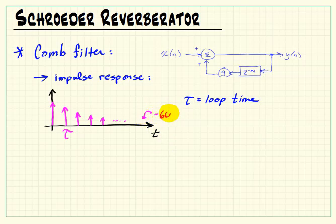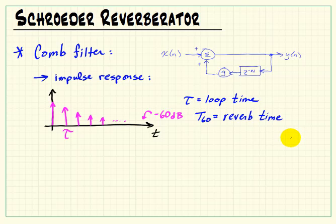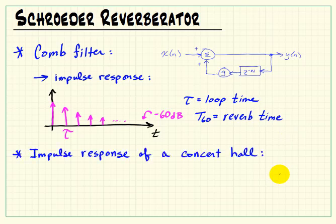Eventually, when the signal drops by a factor of 60 decibels, we call that silence, and so the overall reverb time is referred to as T sub 60.